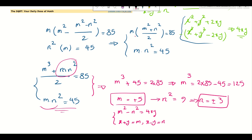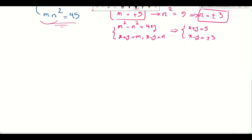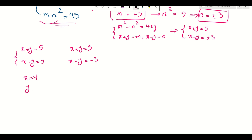Now we find x and y. We have x + y = 5 and x - y = ±3, giving four possible cases. Case 1: x + y = 5 and x - y = 3 → 2x = 8, so x = 4 and y = 1. Case 2: x + y = 5 and x - y = -3 → 2x = 2, so x = 1 and y = 4.